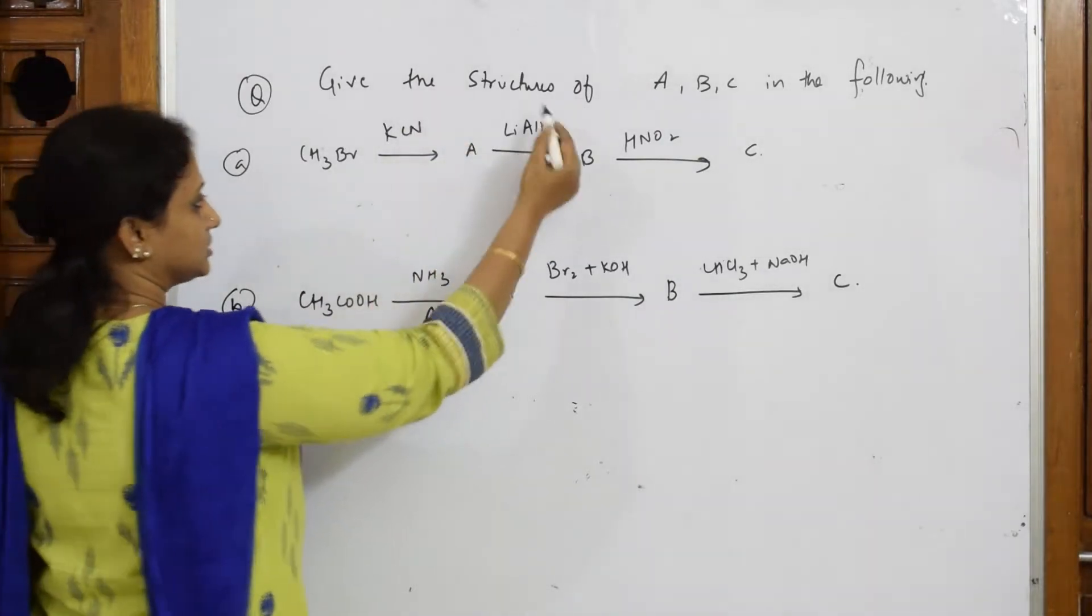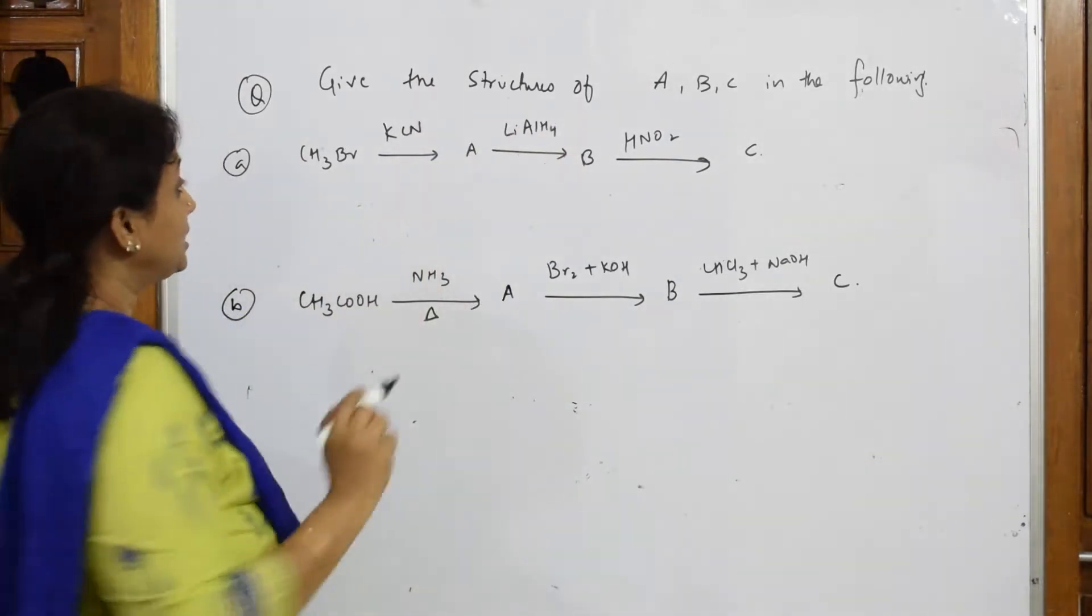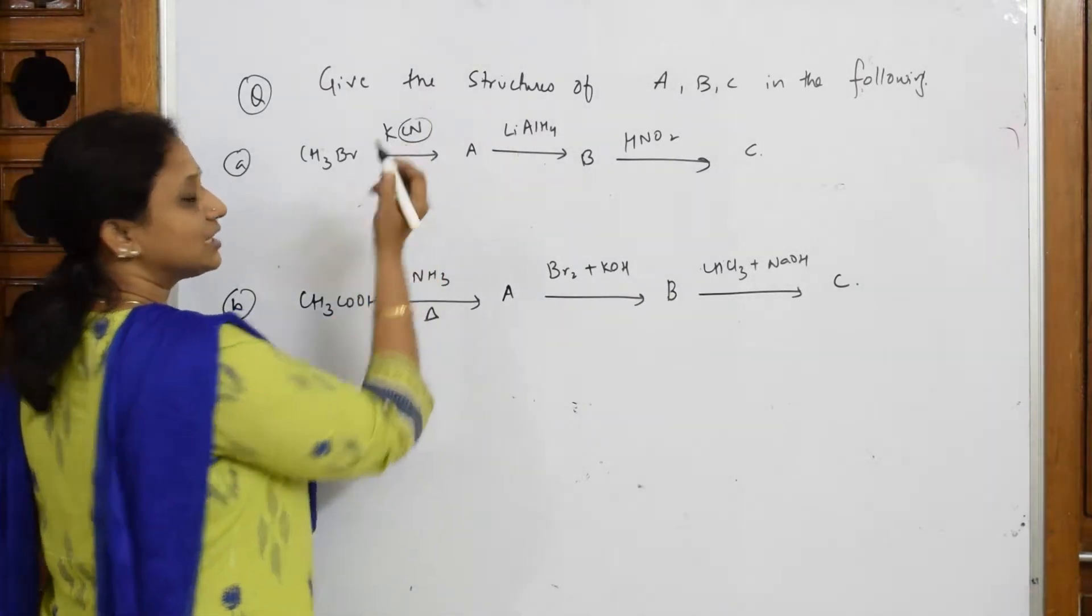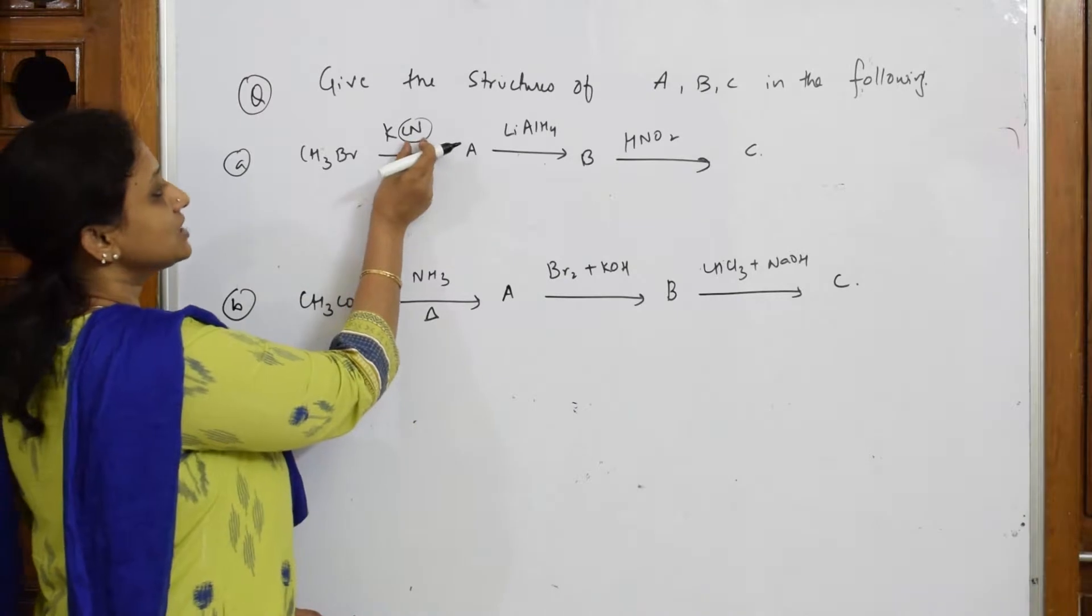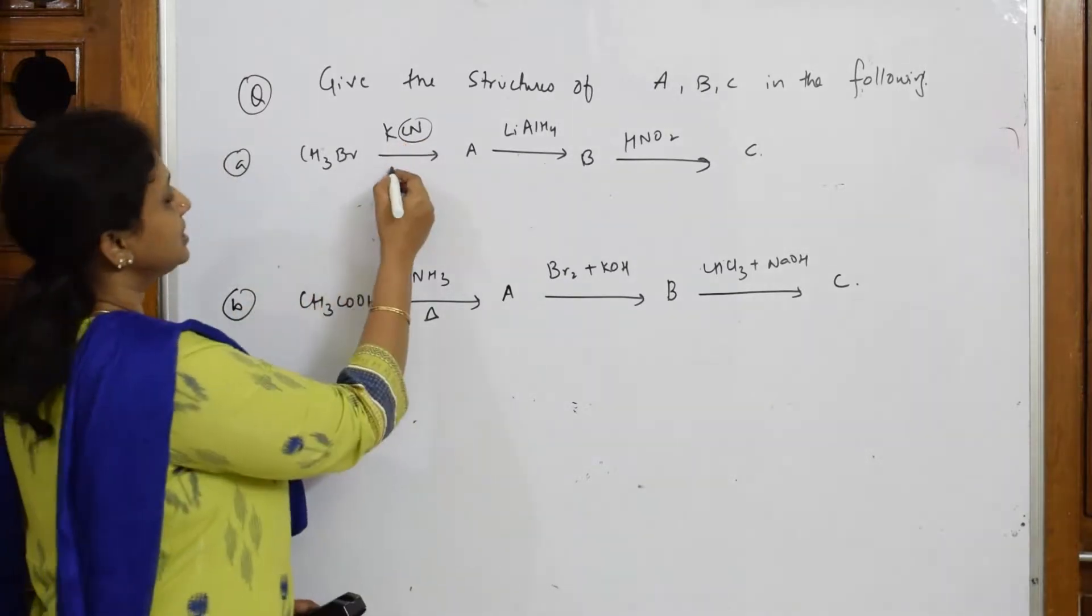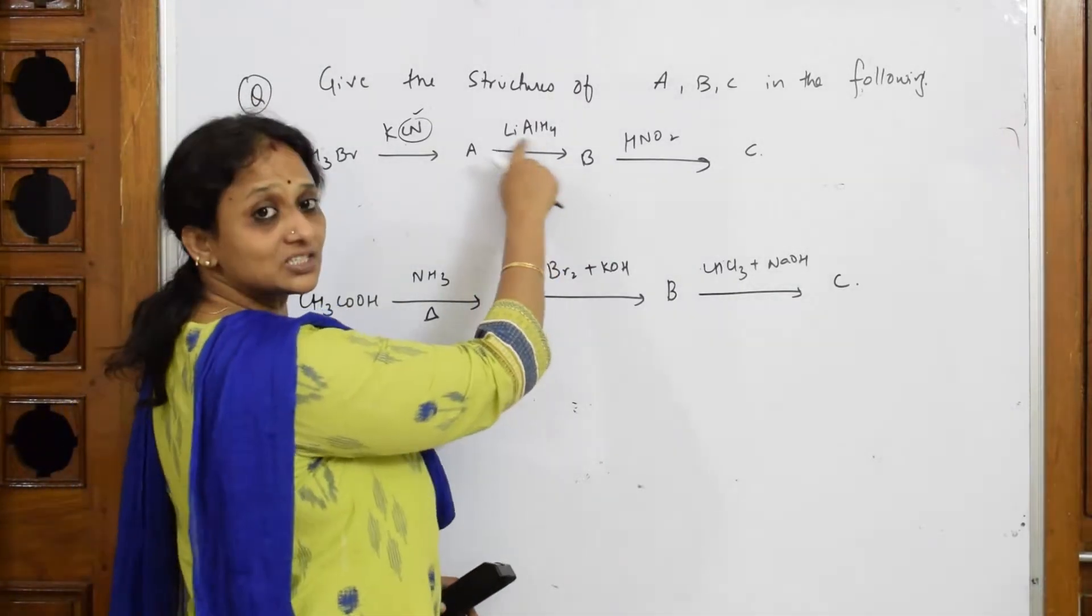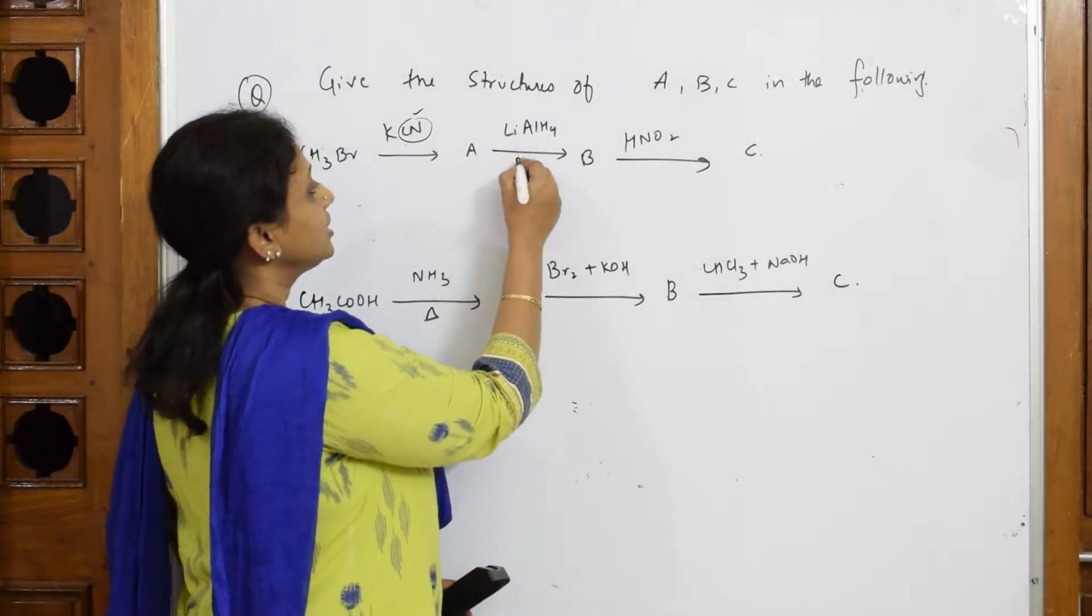What is KCN doing? It's going to supply CN nucleophile. Take your pencil and write it's going to supply this nucleophile CN. Then after that, what is this agent? It is a reducing agent. It has to add hydrogen.